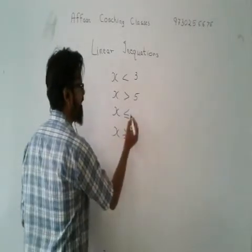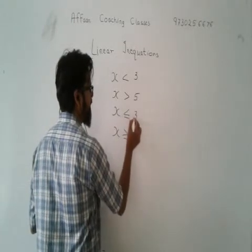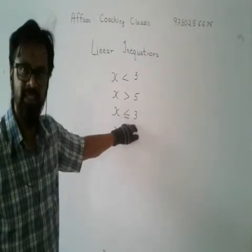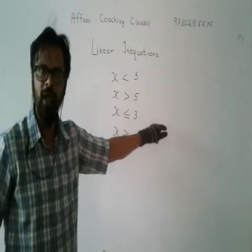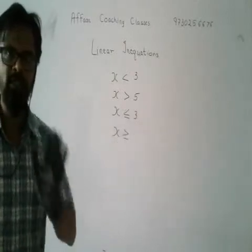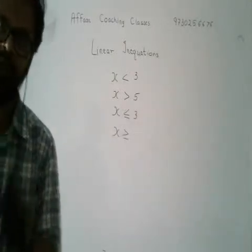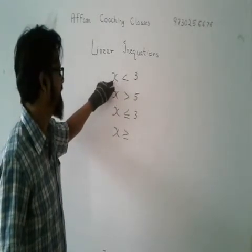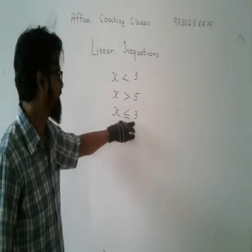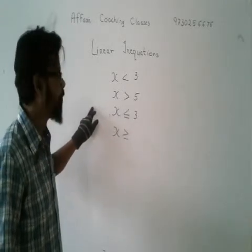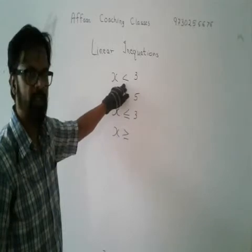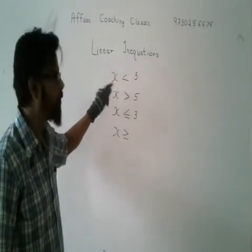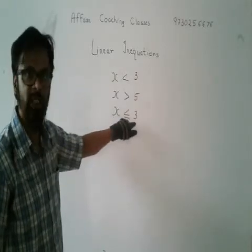If x is greater than or equal to 3, that means x is 3, 4, 5, and so on — 3 is included. Whereas if x is less than or equal to 3, that means x is 3, 2, 1, and so on — 3 is included. But if x is less than 3, that means x is 2, 1, 0 — not 3.